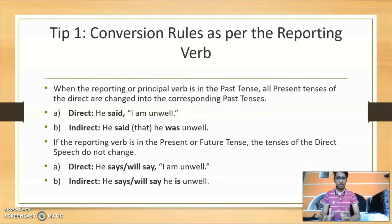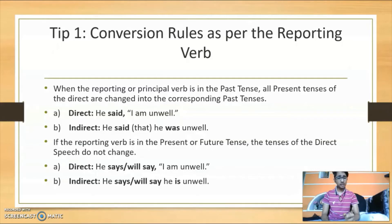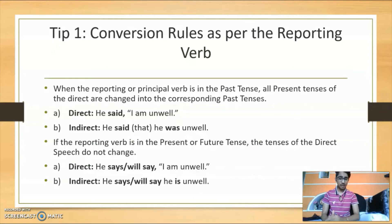The first thing we have to do is find out what is the reporting verb in the sentence. When the reporting or principal verb is in past tense, all the present tenses of the direct speech are changed into the corresponding past tenses. To understand this, we'll take an example. In direct speech: 'He said, I am unwell.' In indirect speech it becomes: 'He said that he was unwell.'